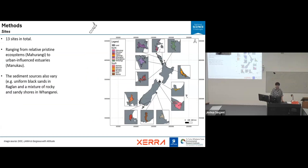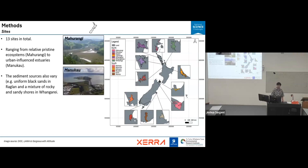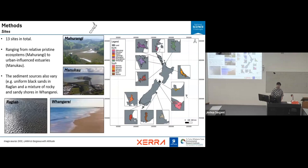For the methods of the first part, we have 13 different sites in total across New Zealand, starting from Tauranga Harbour. These 13 sites range from a relatively pristine ecosystem like Mokurangi to the more heavily influenced estuaries like Manukau. We also have very different sediment sources for these regions — for example, Raglan has uniform black sand because of volcanoes, and Pangalaya has a mixture of rocky and sandy shores. All these sites can represent the general conditions of estuaries in New Zealand.